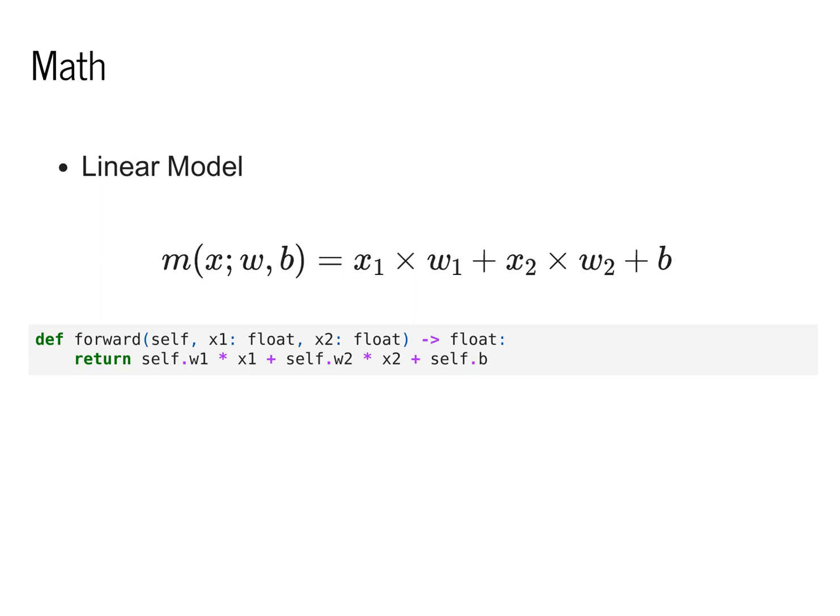Mathematically, the model that we are implementing consists of the following m function. We take in x as our main argument and have parameters w and b. We calculate the value as x1 times w1 plus x2 times w2 plus b. This is the function that we've been implementing in our forward class so far.